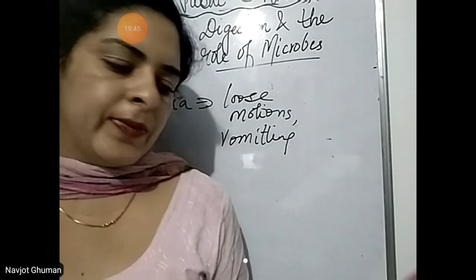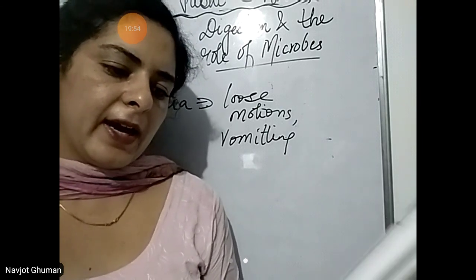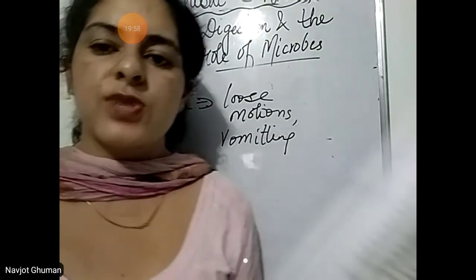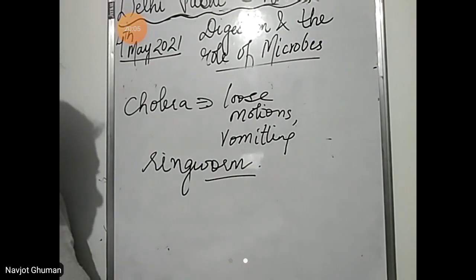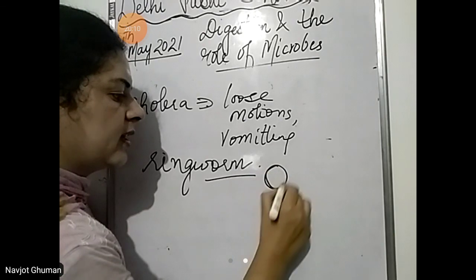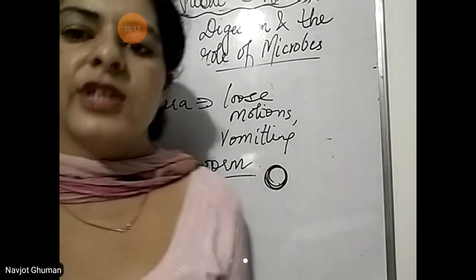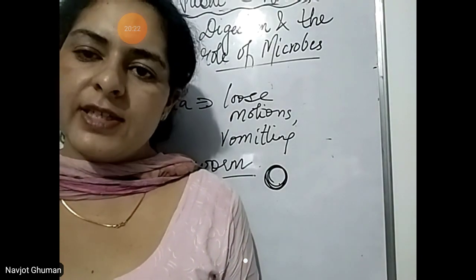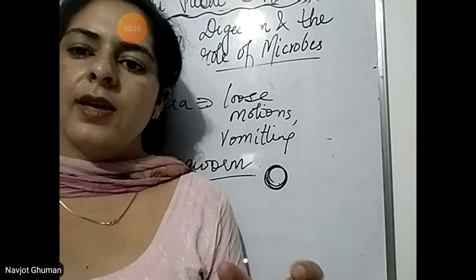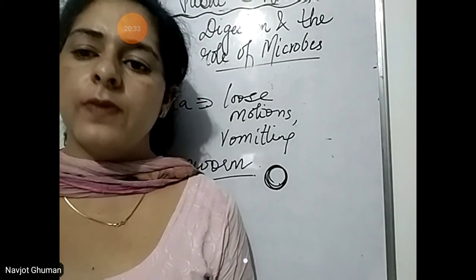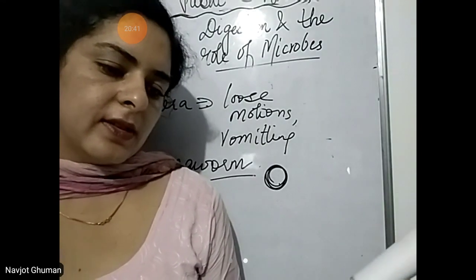Fungi cause diseases such as ringworm and athlete's foot. Ringworm — a crusted rash forms on your body; it can occur anywhere on any part of your body, on arms and legs. It is a red crusted rash and you will feel itching on it. Athlete's foot — there is moist and raw skin between the toes with rashes, and you will have rashes and itching between your toes.